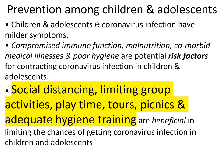For prevention among children and adolescents: children and adolescents with coronavirus infection have milder symptoms. Risk factors include compromised immune function, malnutrition, comorbid medical illness, and poor hygiene. We can protect children and adolescents through social distancing, limiting group activities, limiting playtime, limiting tours and picnics, and adequate hygiene training.